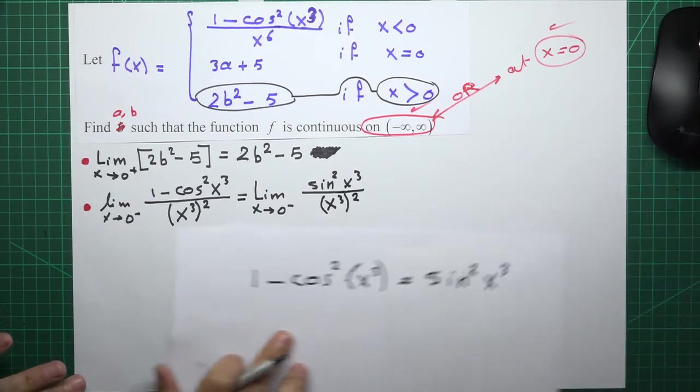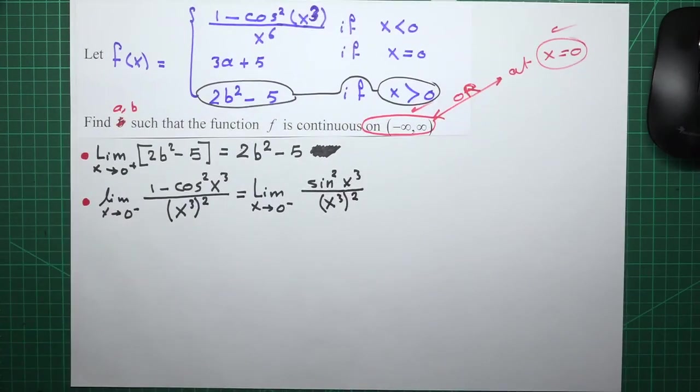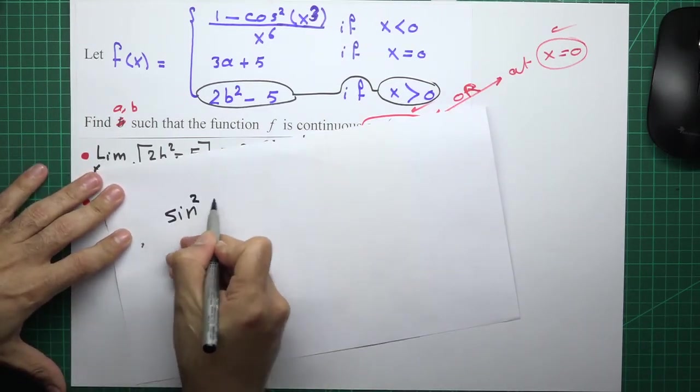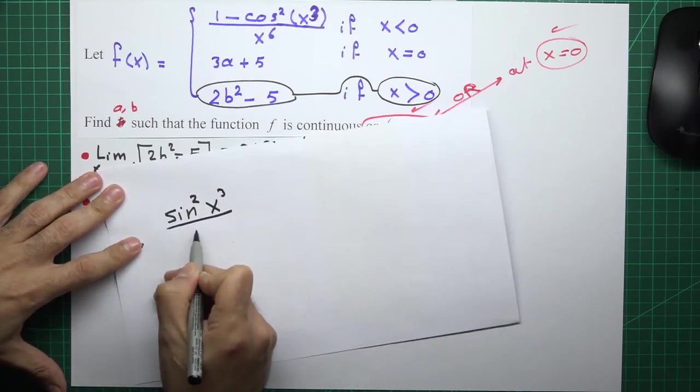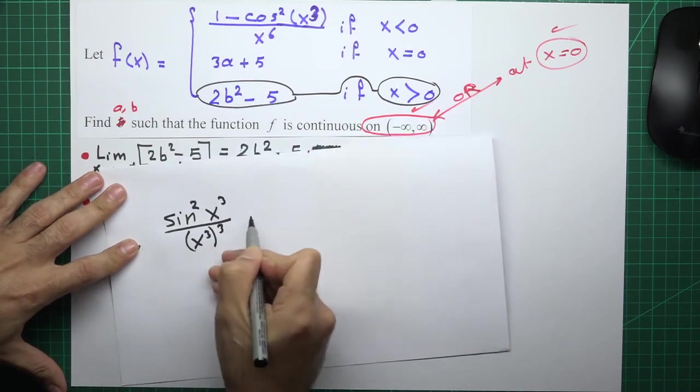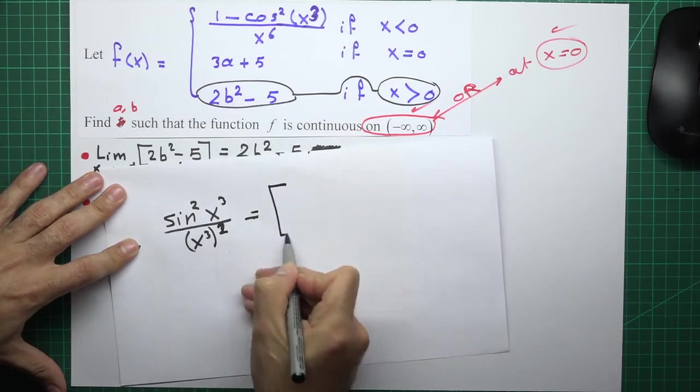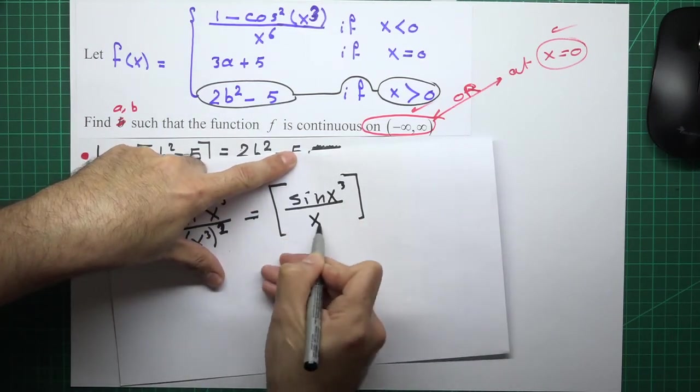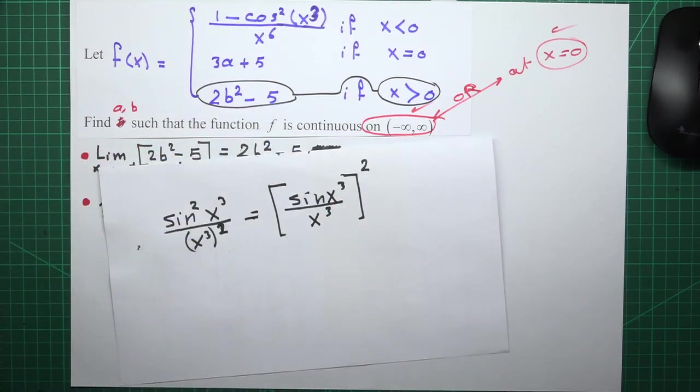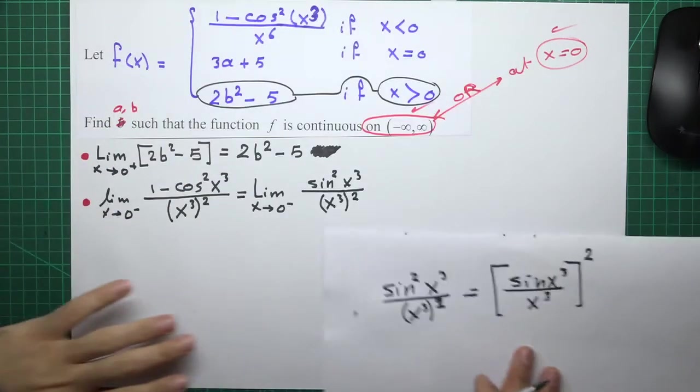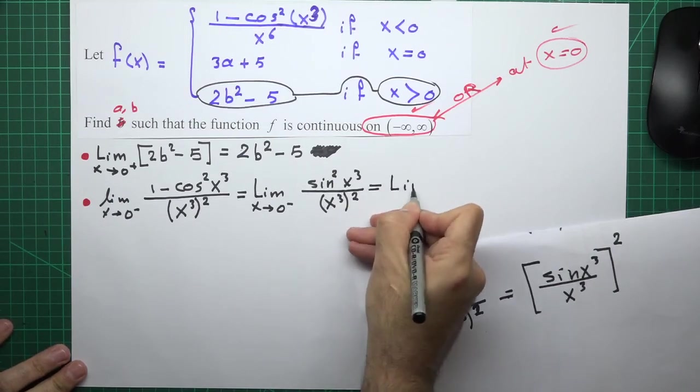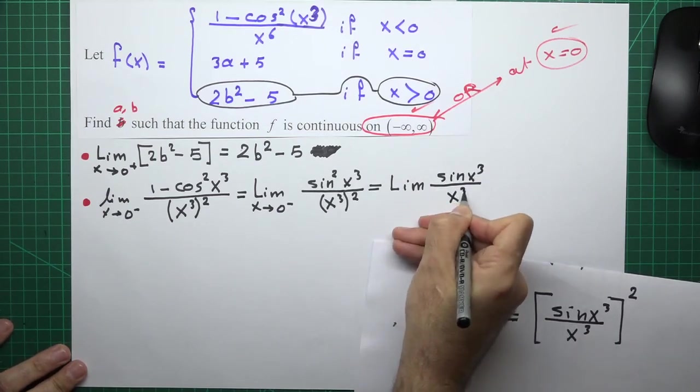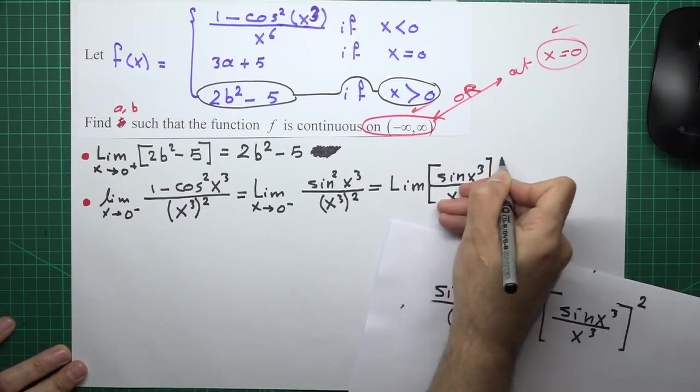I'm designing to shape sine squared x cubed over x cubed squared. We can write it as sine x cubed over x cubed, all to the power of 2.